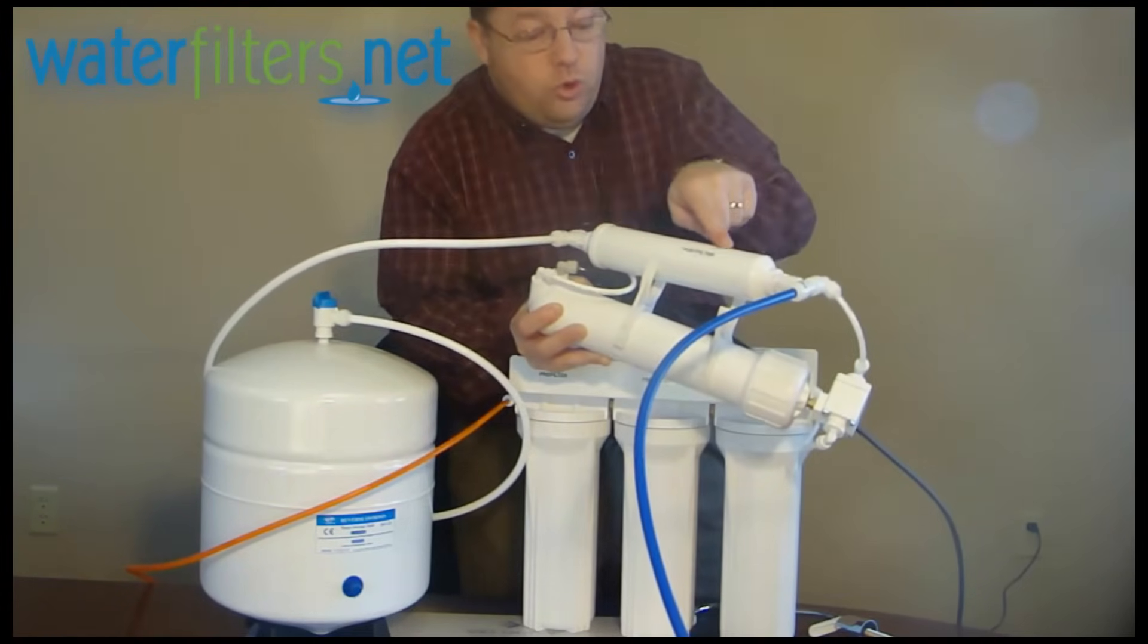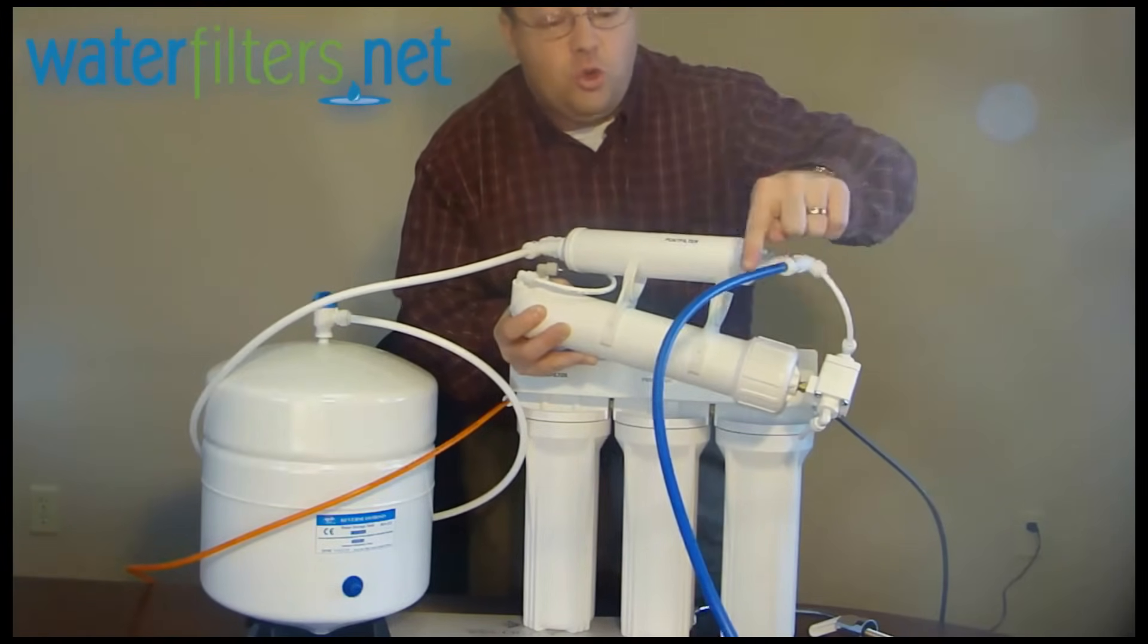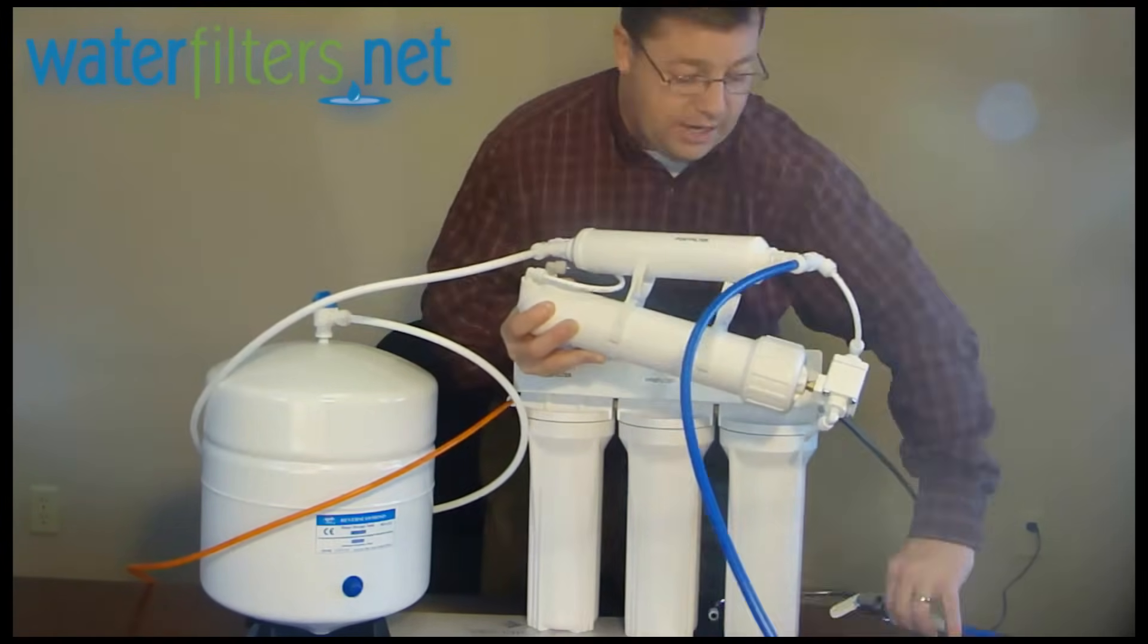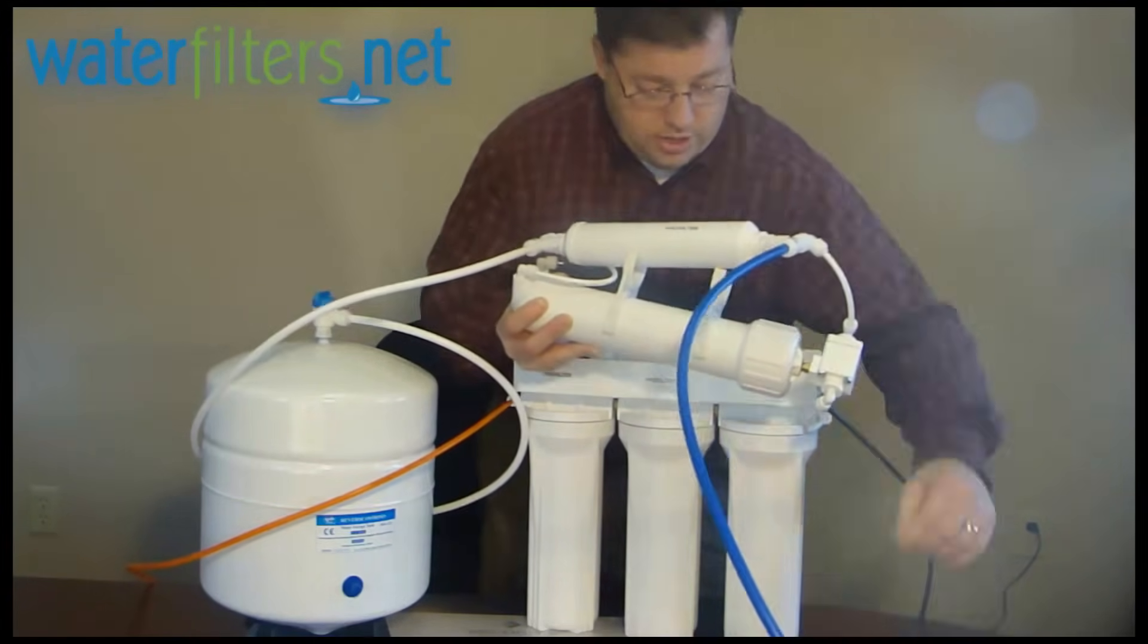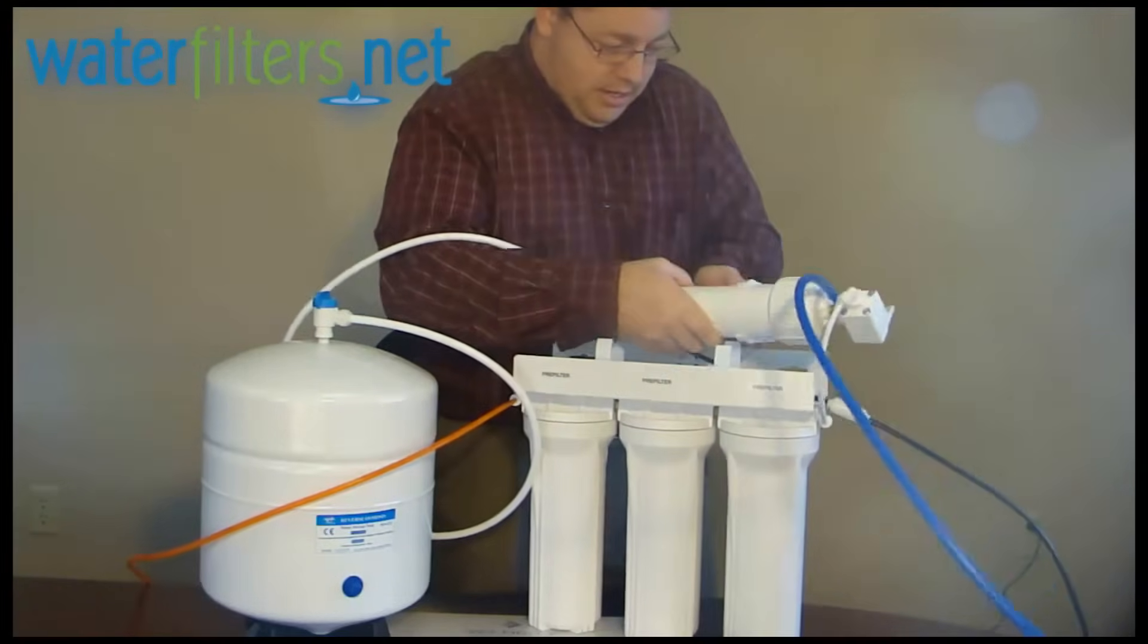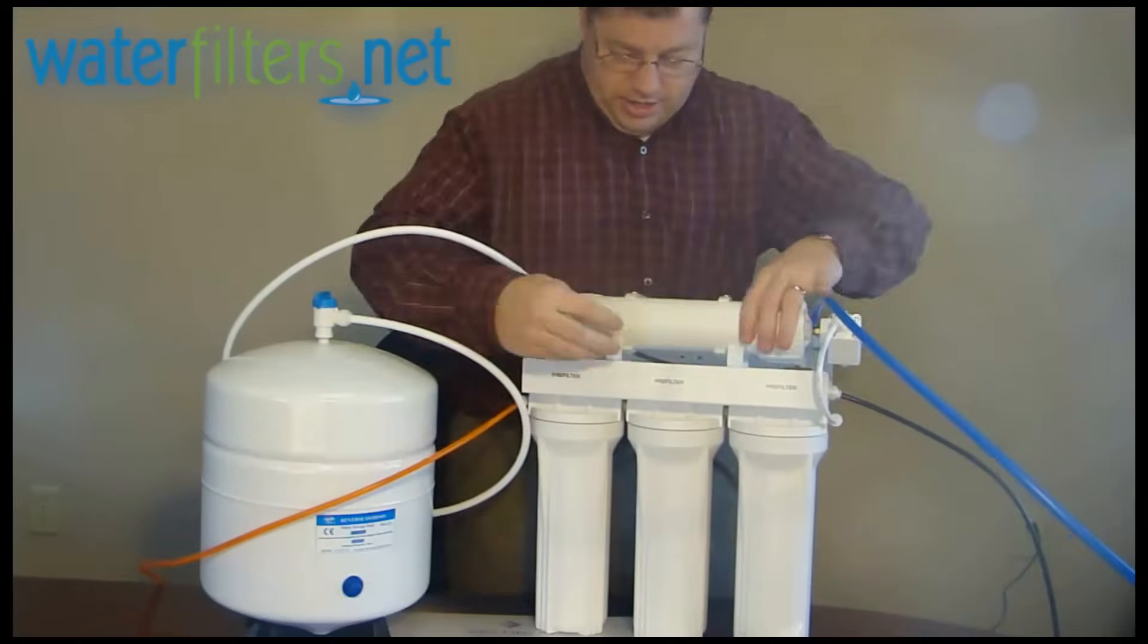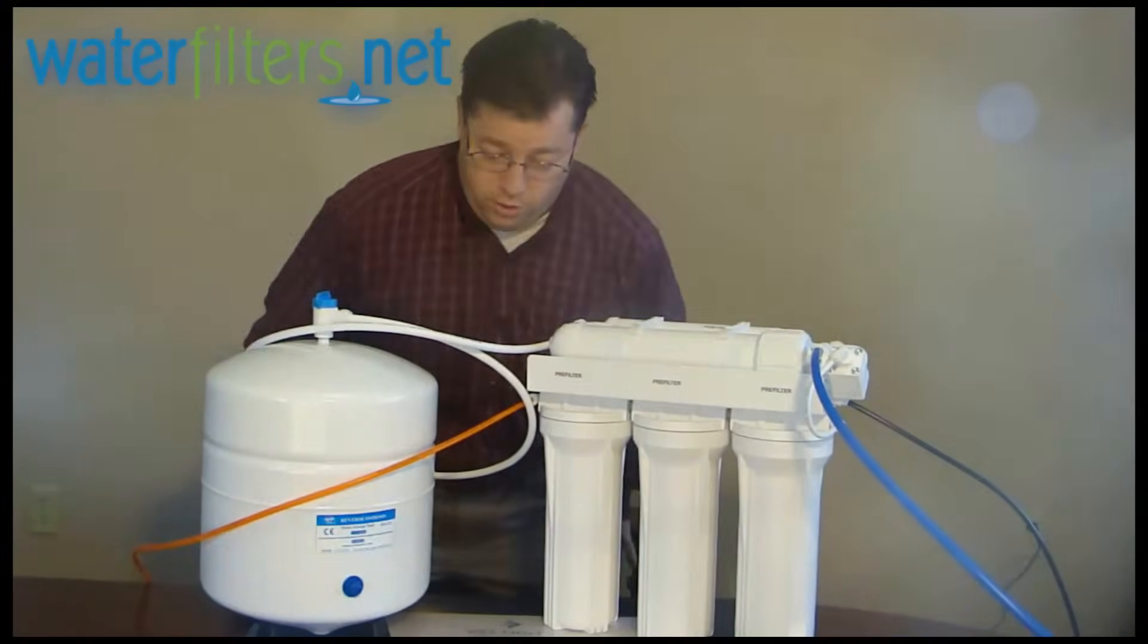Or it can go through this polishing filter and then to the faucet. This blue line leads to a faucet, as you can see here. Now let me just set this back down. Okay. There we go. So that's the flow of water through the system.